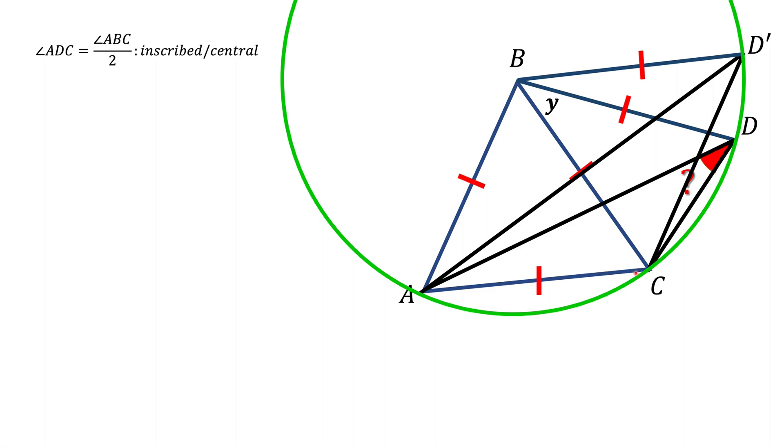And now look at the angle AD prime C. Well, that's also an inscribed angle that is subtended by the same arc AC. This angle D prime also has to be half of the same central angle ABC. And now what we find is that the angle D that we're interested in is directly related to this angle ABC. If we specify angle ABC, we automatically know the angle ADC. It's half of angle ABC.